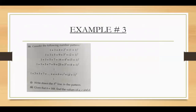Now example number 3, which is from our book. The question says: conclude the following number patterns. In the first part, we need to find the fifth line of the pattern. The first line has 1 plus 3, the second has 1 plus 3 plus 5, the third has 1 plus 3 plus 5 plus 7 — every odd number is being added. For the fifth line, we will add the first six odd numbers: 1 plus 3 plus 5 plus 7 plus 9 plus 11.